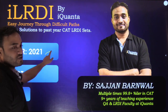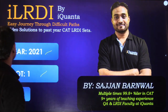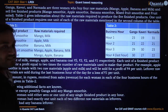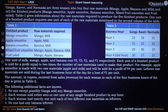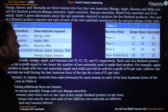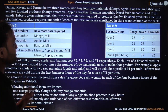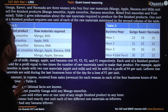Today we are going to discuss a CAT 2021 first slot question. Ganga, Kaveri, and Narmada are three women who buy four raw materials — mango, apple, banana, and milk — and sell five finished products: mango smoothie, apple smoothie, banana smoothie, mixed fruit smoothie, and fruit salad.